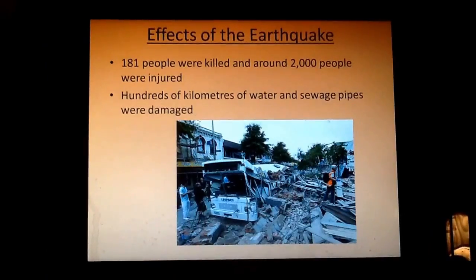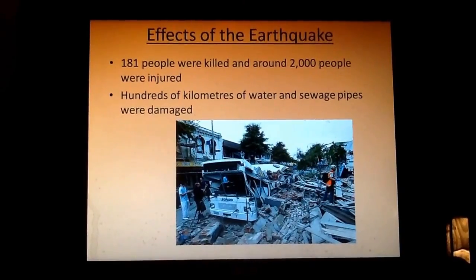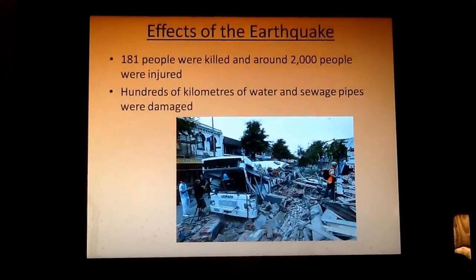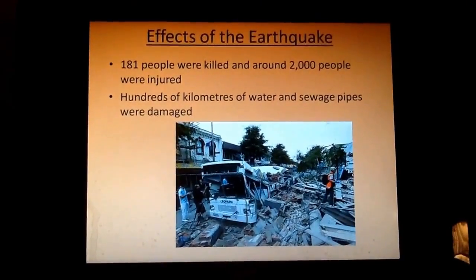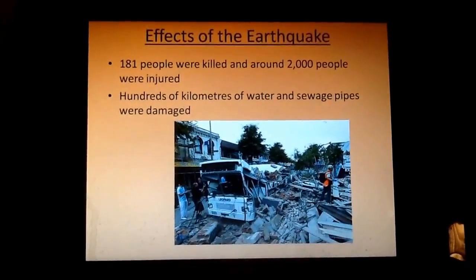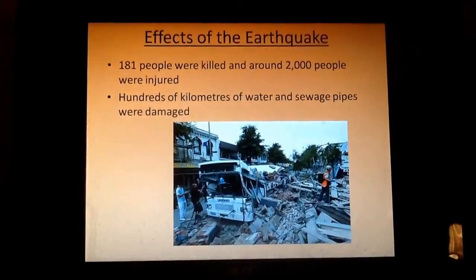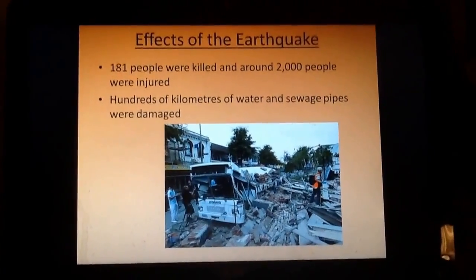Looking at the effects of the earthquake: some of the biggest impacts of the New Zealand earthquake were that 181 people were killed and around 2,000 people were also injured. Additionally, hundreds of kilometres of water and sewage pipes were damaged, which left a lot of people without water.